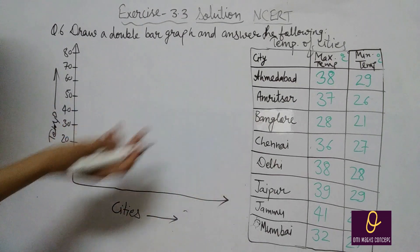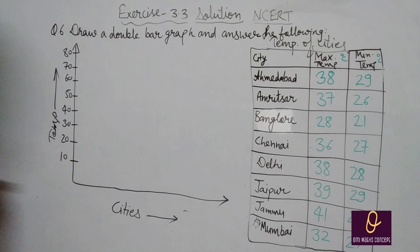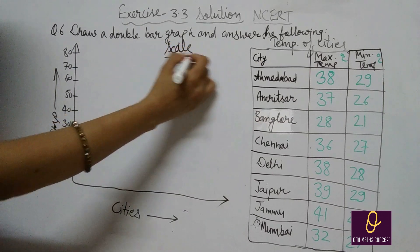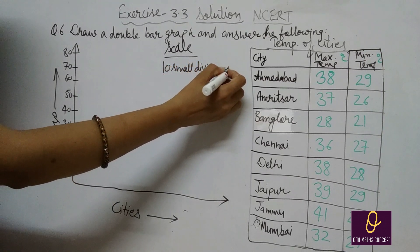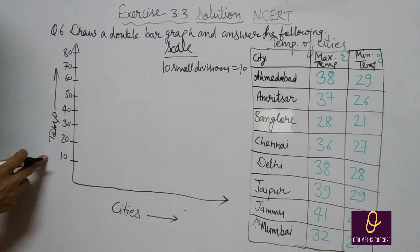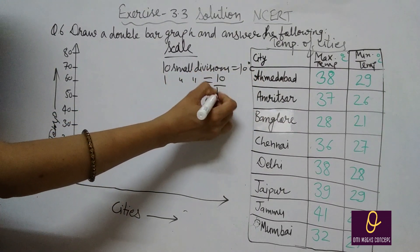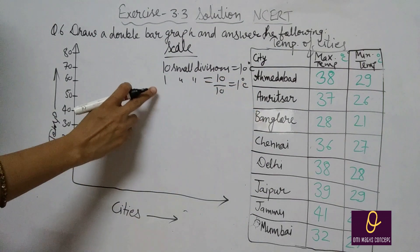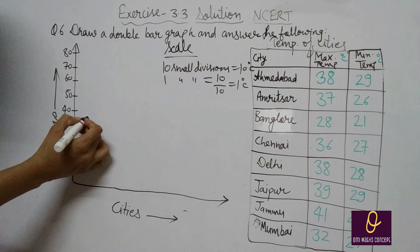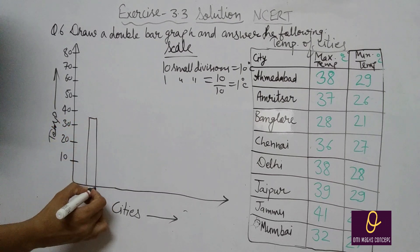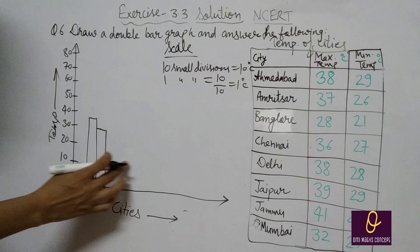सबसे पहले scale देखेंगे: 10 small divisions = 10 degree Celsius, so 1 small division = 1 degree Celsius. M'abad में maximum 38, minimum 29 — 38 का 8th part होगा, 29 का 9th part. ऐसे आप बाकी cities का graph अपने आप करेंगे. Maximum temperature के सब bars same color में लेंगे, minimum temperature के सब bars same color से.